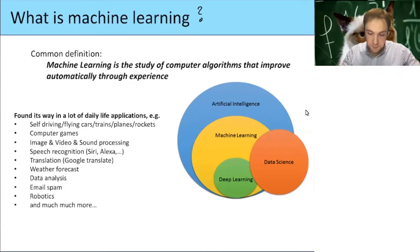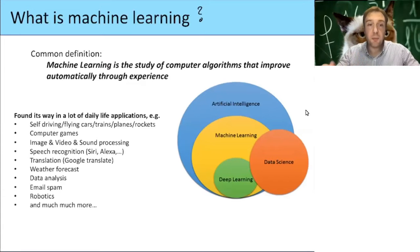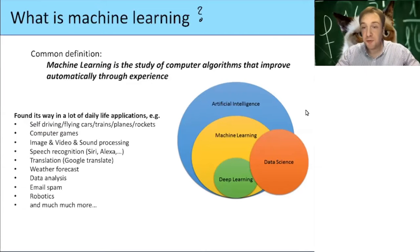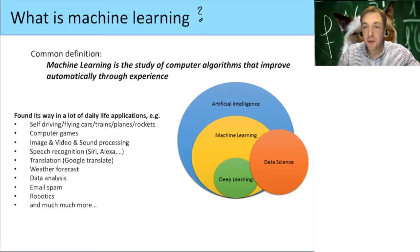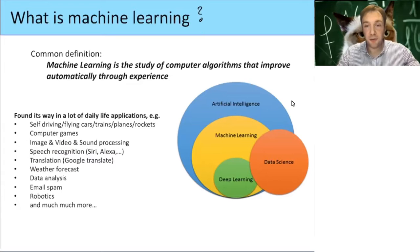Nowadays machine learning has found its way into a lot of applications. On your phone, a lot of things use machine learning without you knowing it. Common things you associate with machine learning are self-driving cars, planes, rockets, computer games, and image, video, and sound processing. For example, the flower filter on someone's head is done by machine learning. It's also used in speech recognition, Google Translate, weather forecasting, email spam, robotics, and so on.